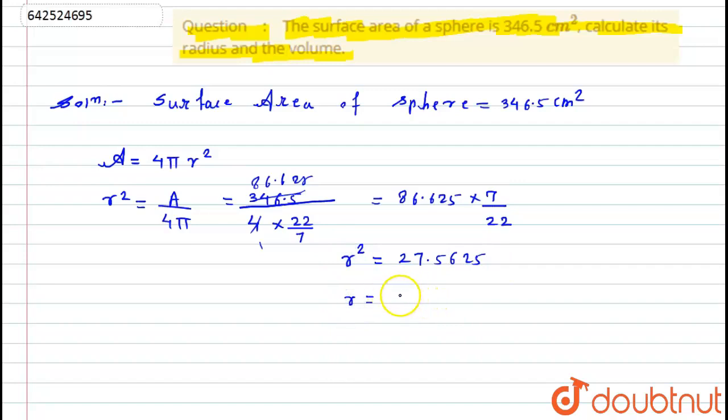But I want r, so I will take square root on both sides. So it will become 5.25. So here I got the radius of the sphere as 5.25 centimeter.